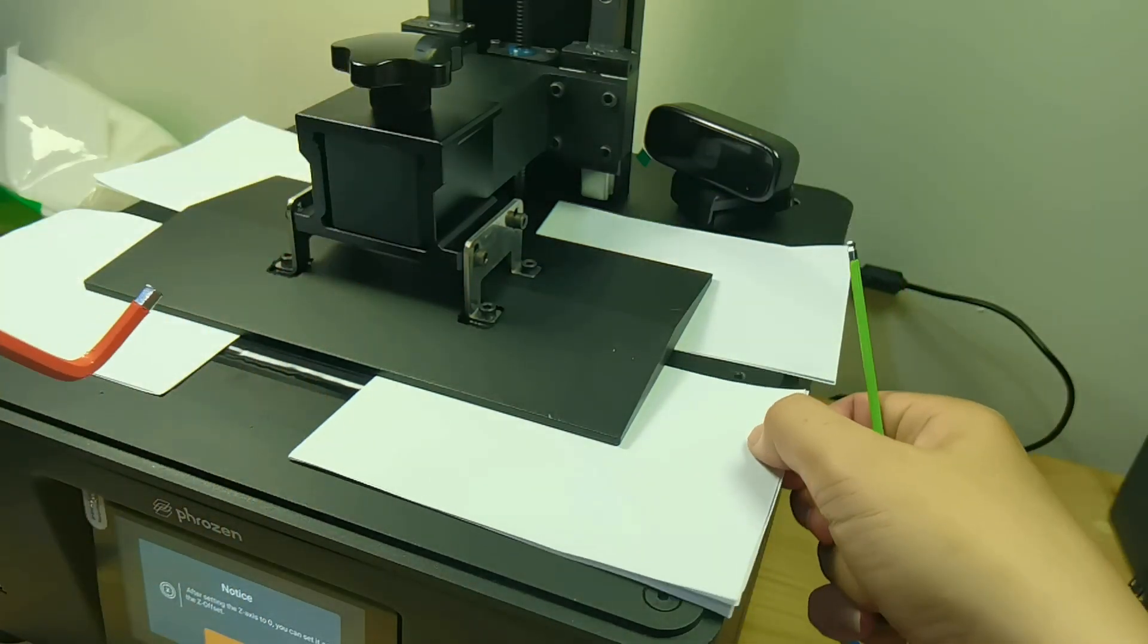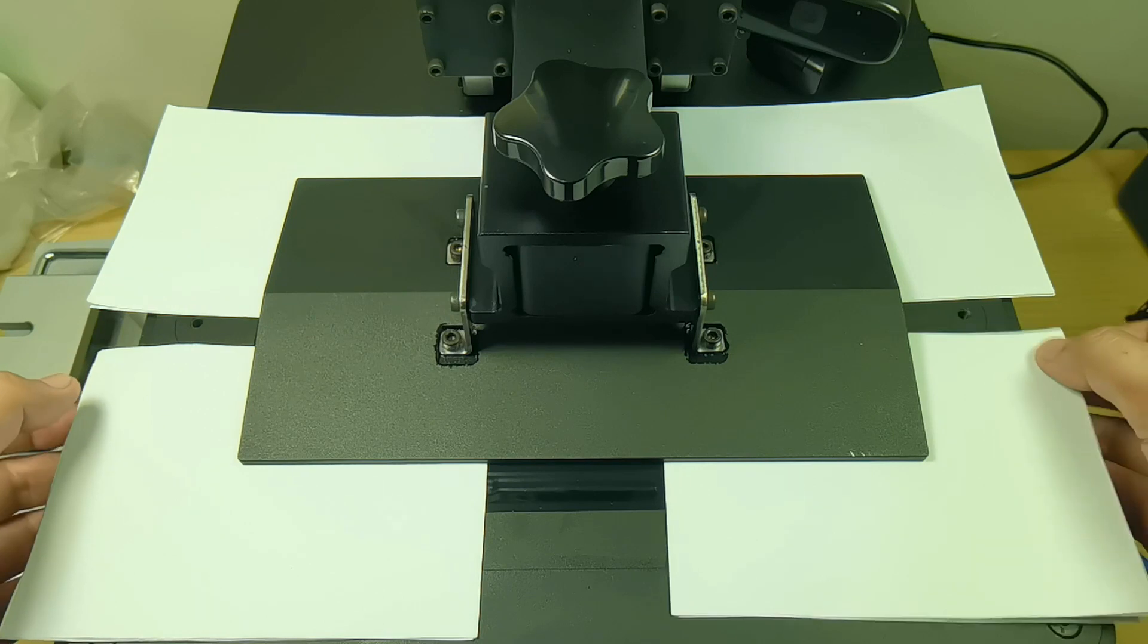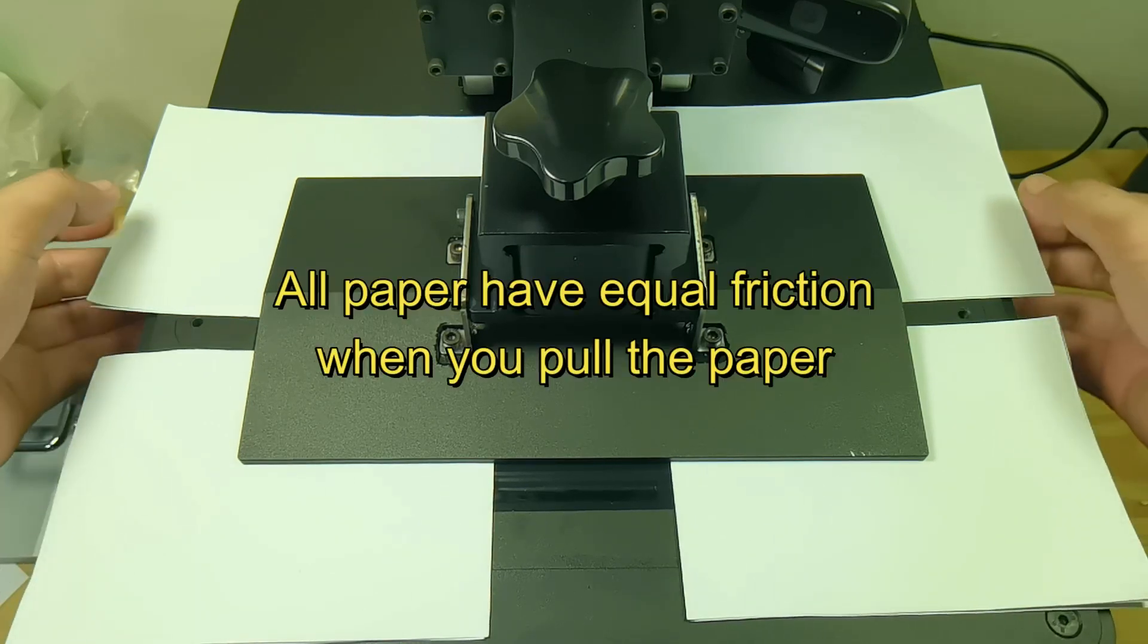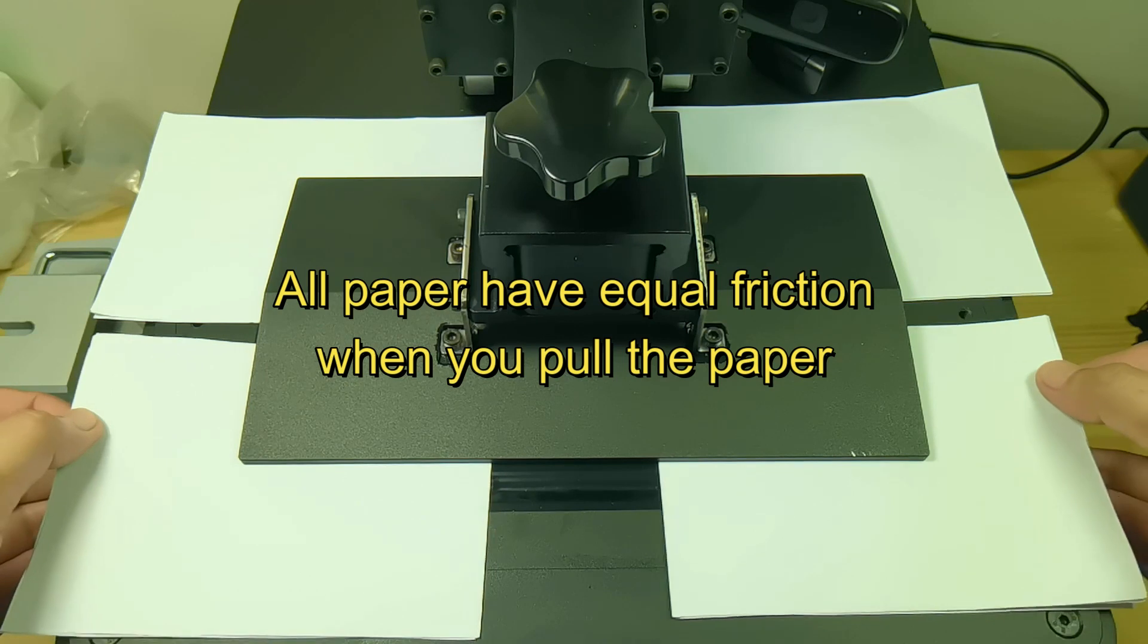And we have good friction now. Once you feel all corners have very good friction when pulling the paper, that means your build plate is level.